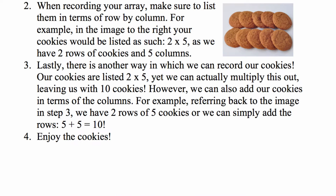There is another way in which we can record our cookies. Our cookies are listed as two rows by five columns. In fact, we can multiply this out, leaving us with ten cookies. And as you'll see in the image, we do in fact have ten cookies.